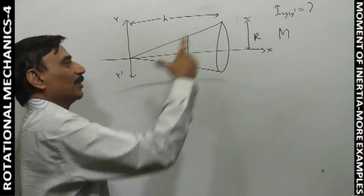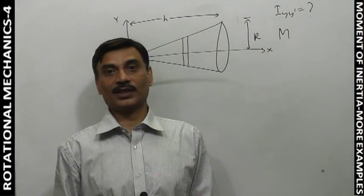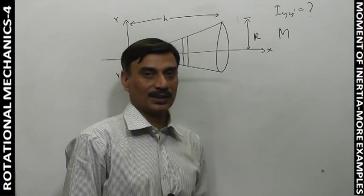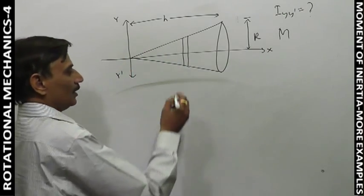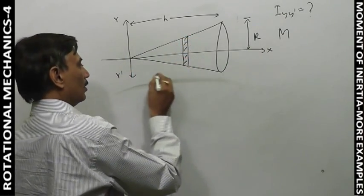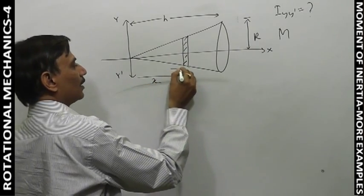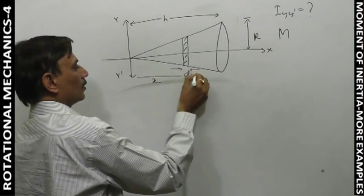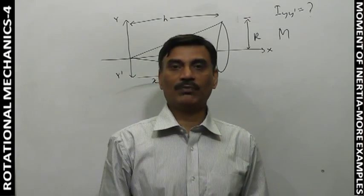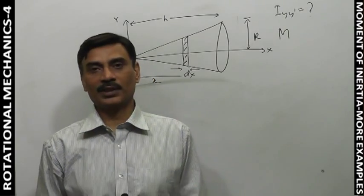This disc is the same size. Now what we have to do — our approach is the same, absolutely the same. We first take this disc at x distance with dx thickness.